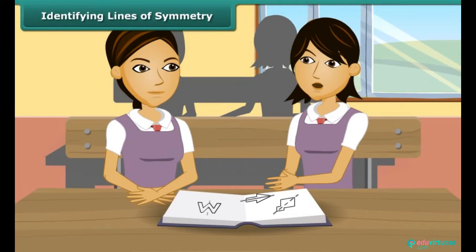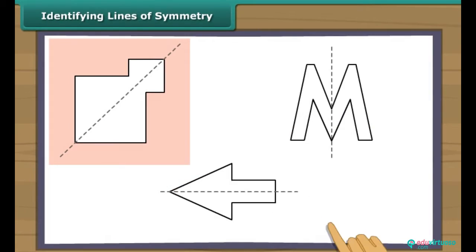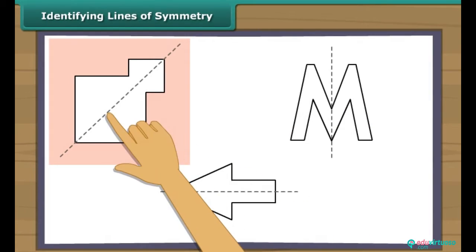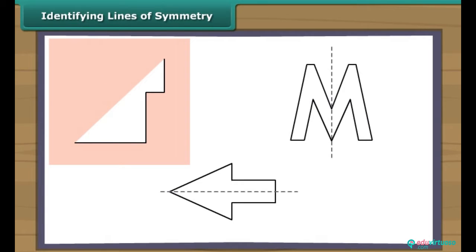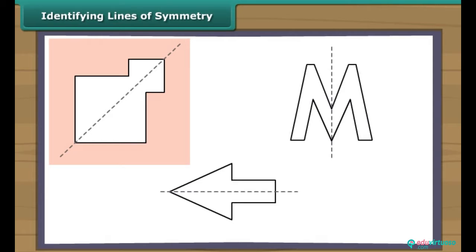Priya, can you now identify the line of symmetry in these designs? I will try. In this figure, this is the line of symmetry or axis of symmetry. How? When we fold this design this way, the two parts so formed will coincide. So this is the line of symmetry.